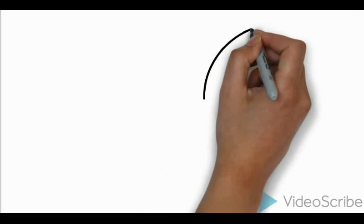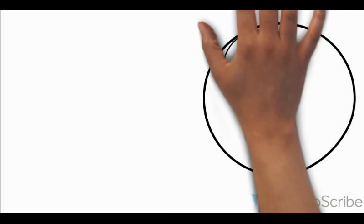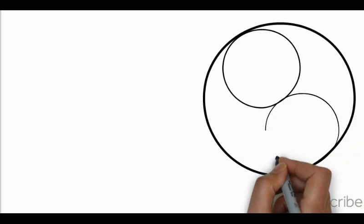So, here is the bigger circle with radius 4 cm. Let's start filling it. Here comes the first circle with 2 cm radius, and here comes the second circle with 2 cm radius.